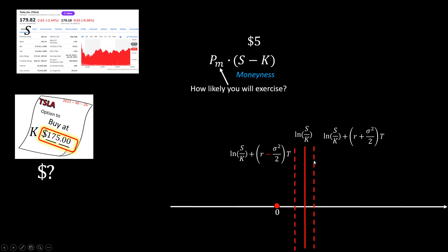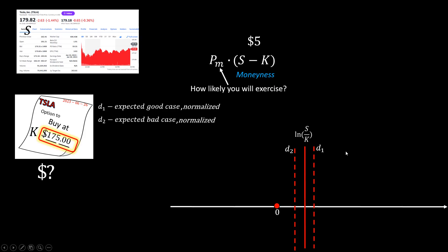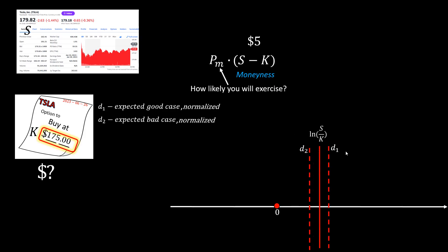Then we want to know what's the chance of exercising the option on the expiry date, when it's good and bad. So we normalize these two events by dividing over the volatility. Let's denote D1 as the expected good case, and D2 as the expected bad case — both normalized. This leads to a shift on the axis: if they're to the right, that means they're in the money; if they're to the left, that means they're out of the money. Their distance to the origin corresponds to how likely the option is in the money.